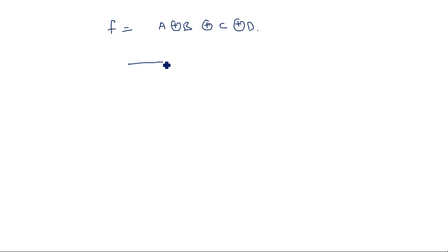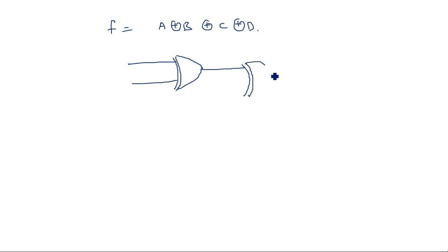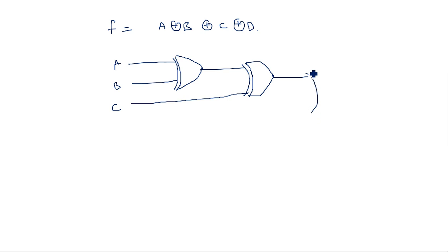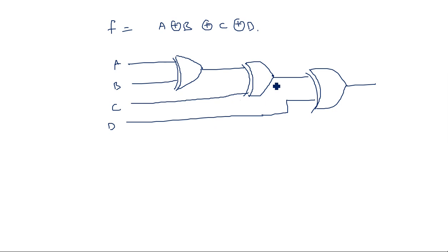To draw the circuit: we use one XOR gate for A and B, then one more XOR gate combining that result with C, and then one final XOR gate combining with D. This gives us the even parity generator output. Thank you.